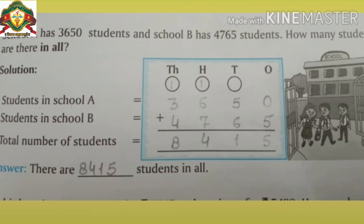Question number 2: School A has 3650 students and School B has 4765 students. So how many students are there in all? Here, students in School A — आपको जो भी digits लिखेंगे, वो आप proper column में लिखेंगे, यानि कि ones, tens, hundreds, thousands, जो proper place दी हुई है, उसी के according आप number लिखेंगे। And next line — students in School B. And in last, total all students. Answer में जो आपको space given है, वहाँ आप answer लिखेंगे।